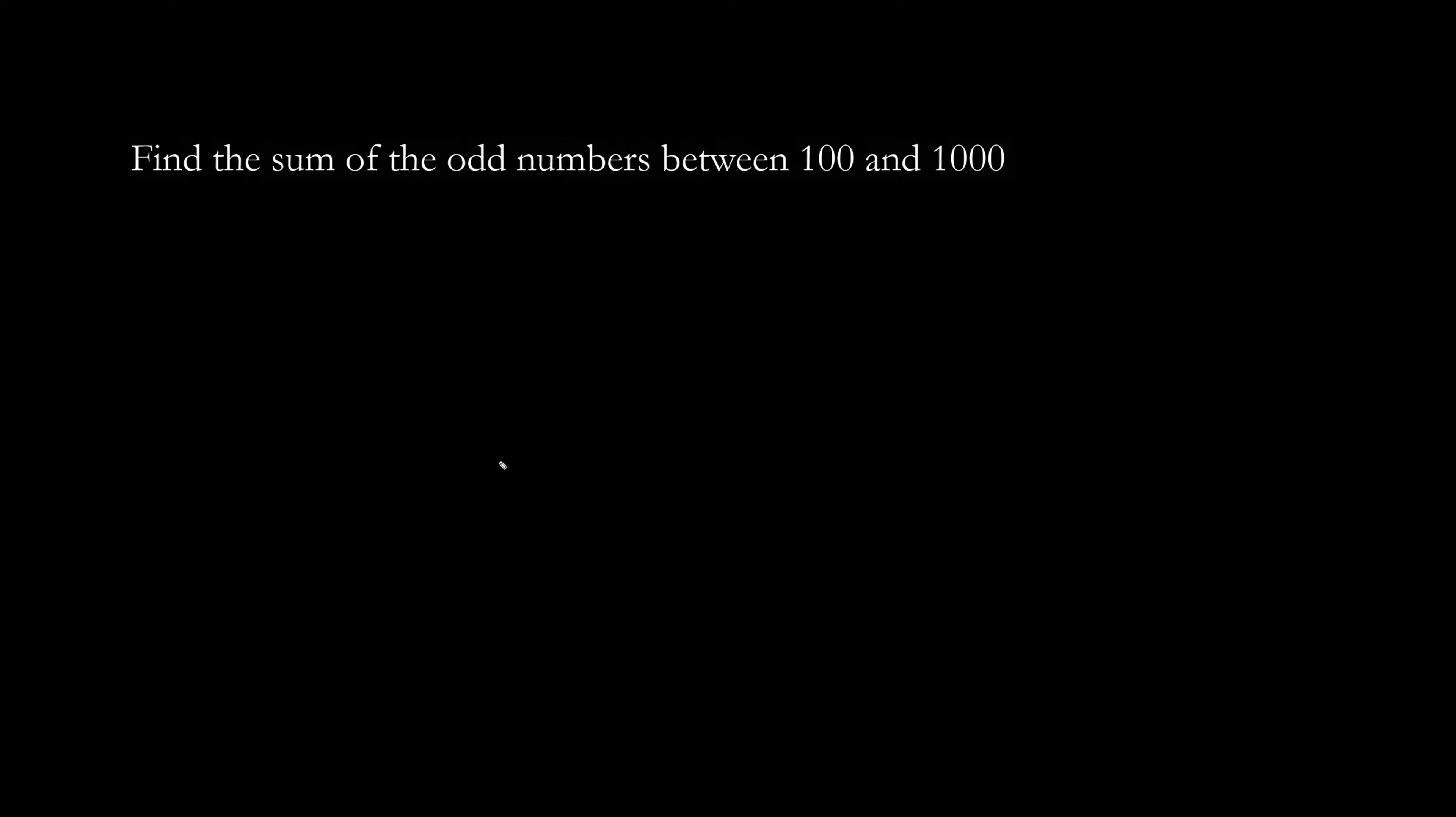Let's find the sum of the odd numbers between 100 and 1000. So the first odd number we see is 101, 103, 105, etc. We're going up by twos.